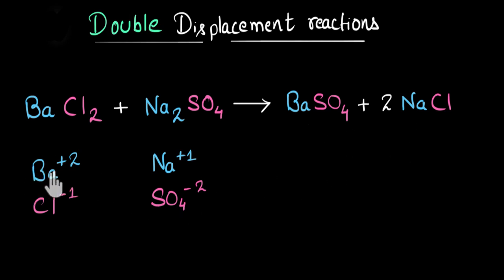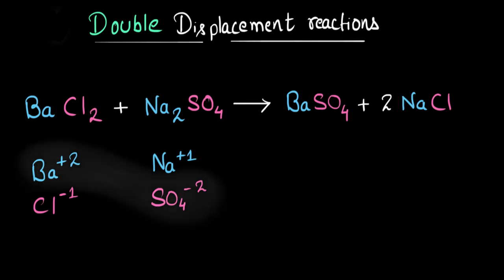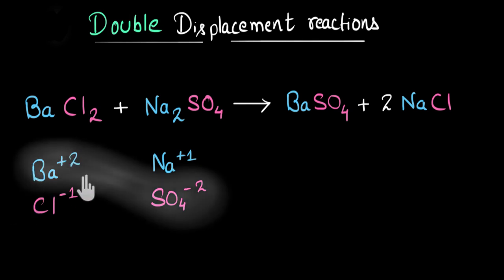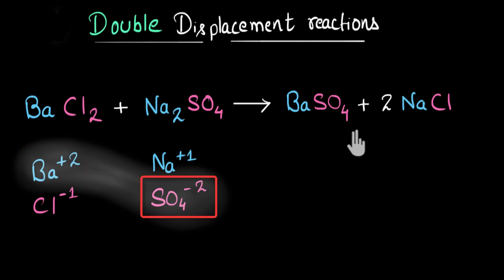Now see, the moment barium ion and sulfate ion come together, they form barium sulfate which is insoluble in water — meaning it will settle down and precipitate out of the solution. Just like when you mix sand and water, the sand settles down after some time. Something very similar is going to happen with barium sulfate. That means barium and sulfate ions won't be available in the solution anymore. The only ions available are sodium and chloride, which will form sodium chloride. And since we don't have any barium ion left, we can't have barium chloride being formed. And since we don't have any sulfate ion left, we can't have sodium sulfate being formed.